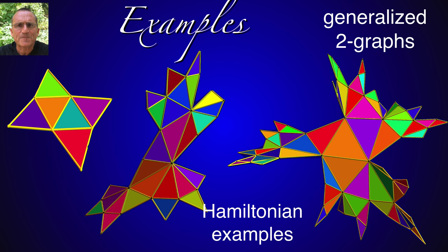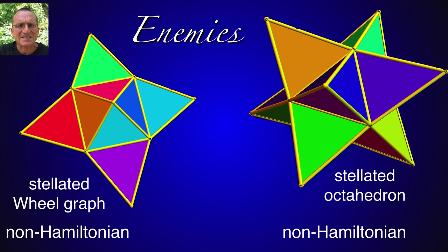We have more examples. Generalized two balls. All Hamiltonian. The stellated diamond to the left has no interior points so that we don't have to worry about the accessibility.